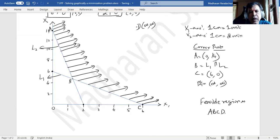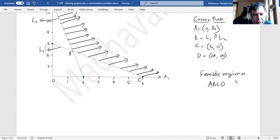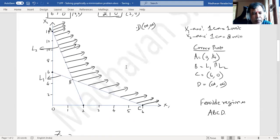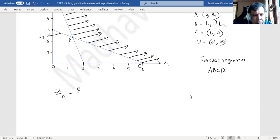Now let us evaluate the Z values for the corner points. Z of A - what is Z? Z is 2x₁ + 3x₂. So it is 2 times 0 and 3 times 14, which equals 42.